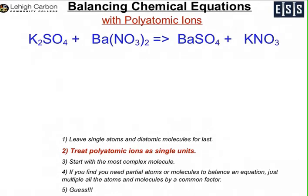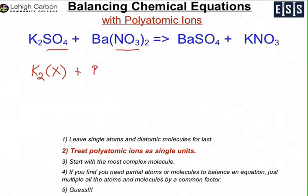A way to help with balancing is to recognize that sulfate is a polyatomic ion, and so is nitrate, NO3. If you treat them as single units — leave your potassium, but represent sulfate with an X — you have one sulfate ion in that molecule. And in the barium nitrate, if we say Z is the nitrate molecule, NO3, then we have two of those in this molecule.